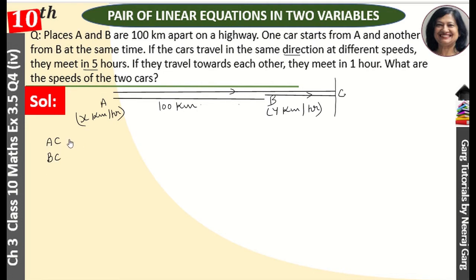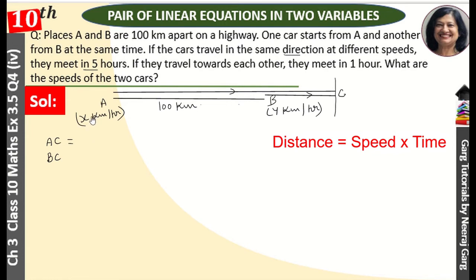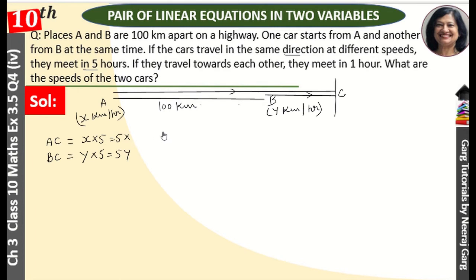Now, what is the distance AC? Distance equals speed multiplied by time. Speed of car A is x and time is 5, so AC equals 5x. Speed of car B is y and time is 5, so BC equals 5y.